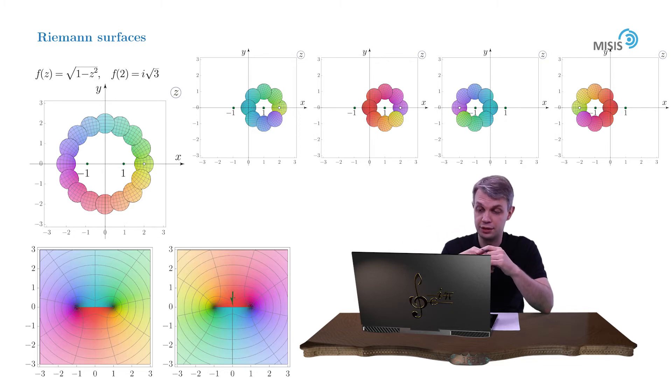Namely, the upper bank of the branch cut of the first Riemann sheet should be glued with the lower bank of the branch cut of the second Riemann sheet and vice versa. And with these connection rules we again described the topological structure of our Riemann surface.